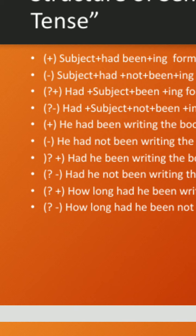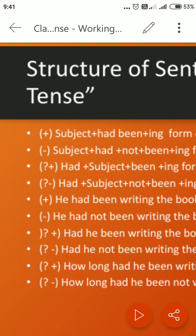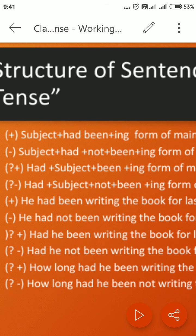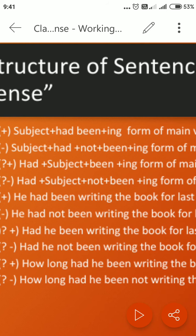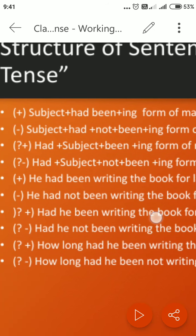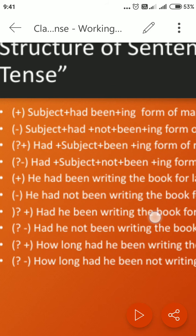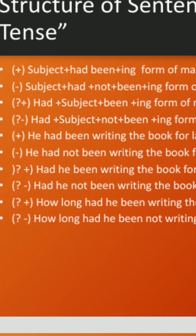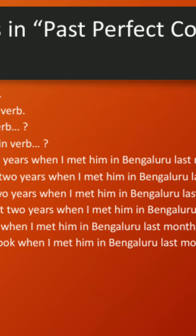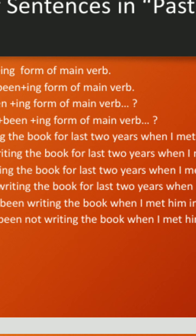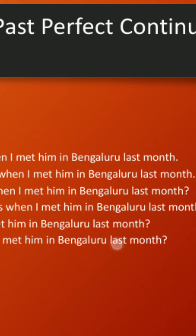In negative construction, you add 'not' after the auxiliary verb 'had'. So the structure is: subject plus had plus not plus been plus ing form of the main verb. For example: 'He had not been writing the book for last two years when I met him in Bengaluru last month.'